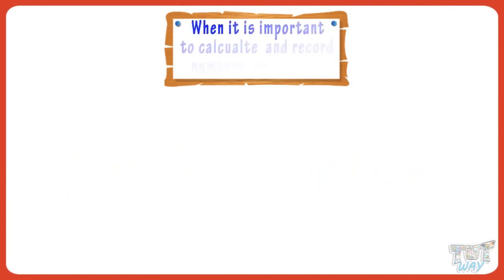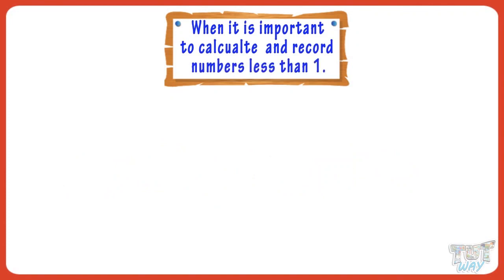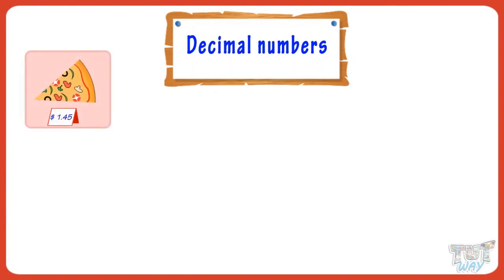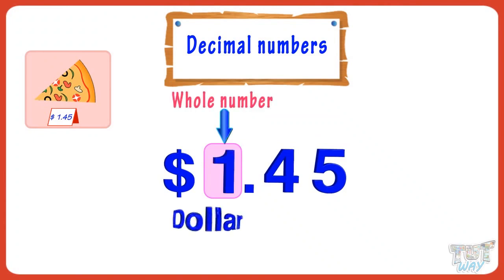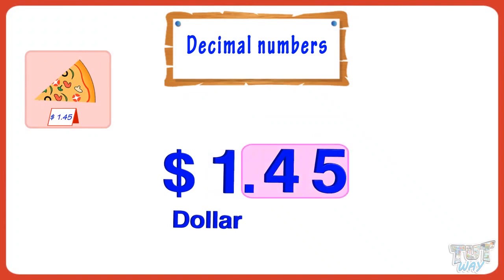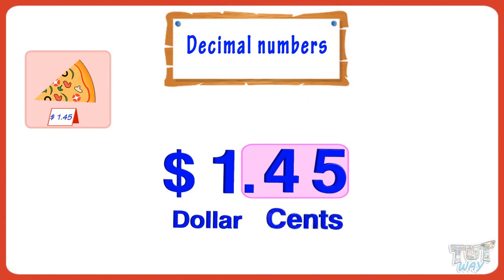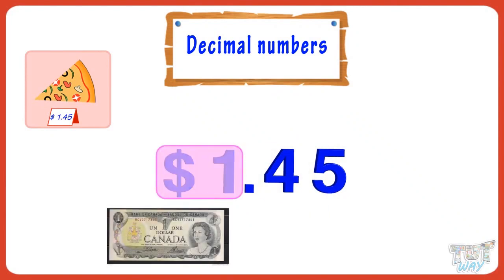Now, let's see some instances when it is important to calculate and record numbers less than one. A slice of pizza costs one point forty-five. Here it is a decimal number, where one is a whole number representing a dollar, and 0.45 is a fraction of a dollar — it is forty-five cents. So, one point forty-five means a dollar and forty-five cents.